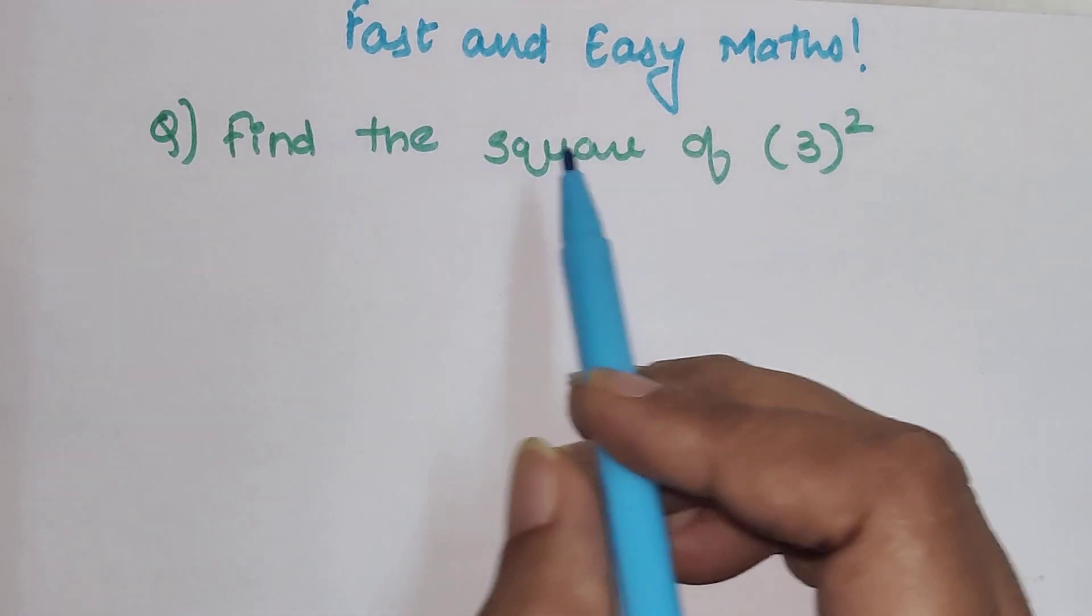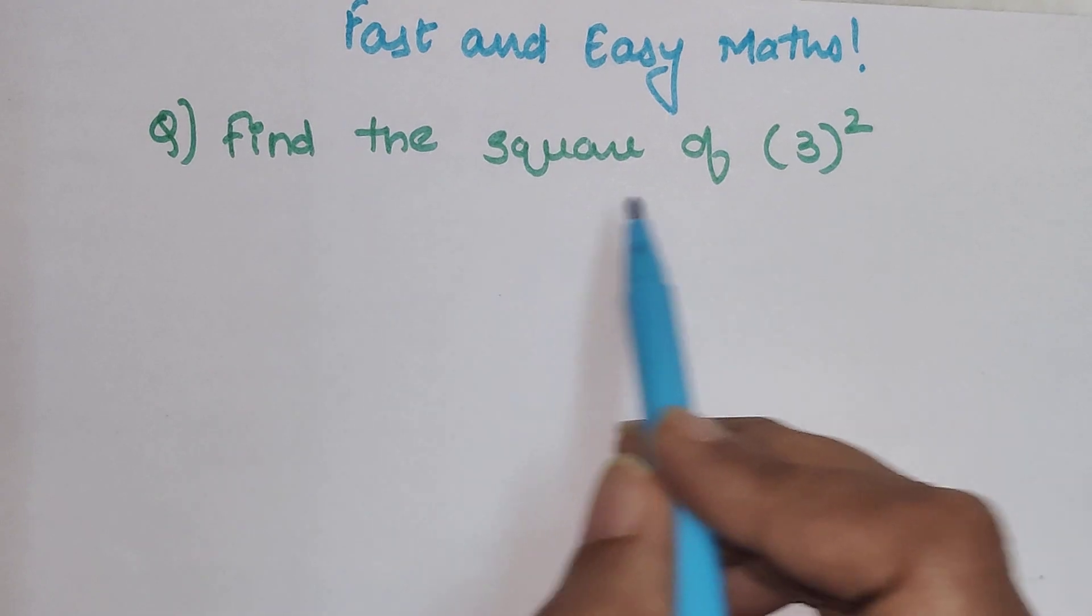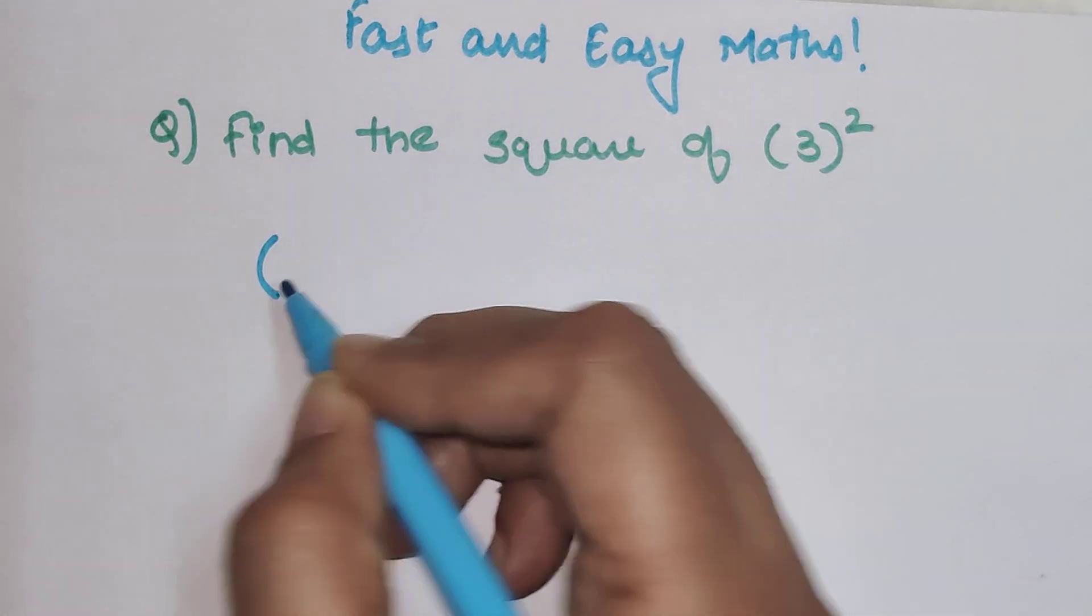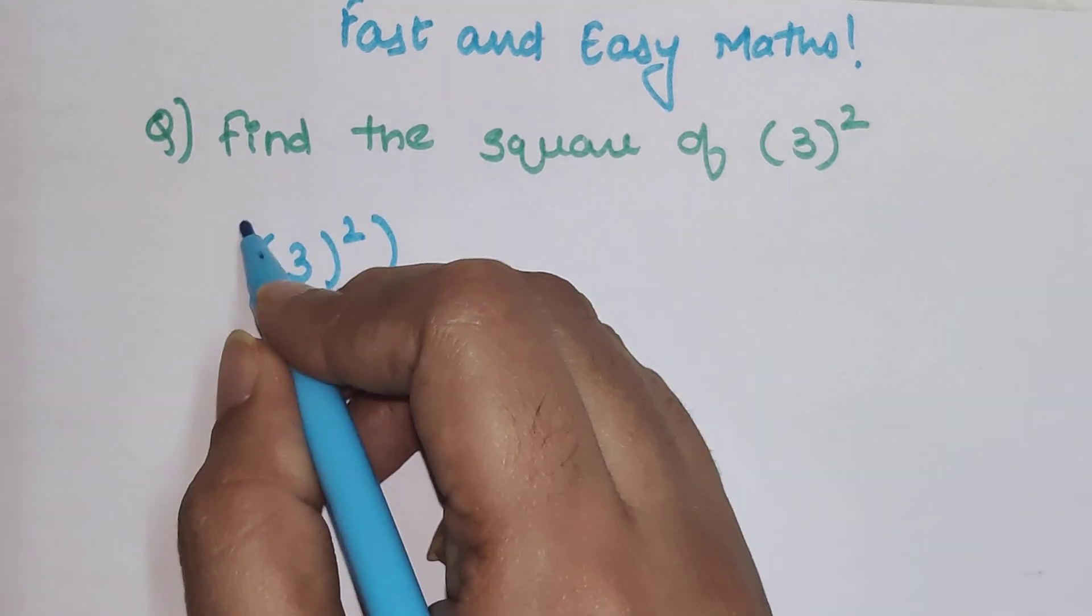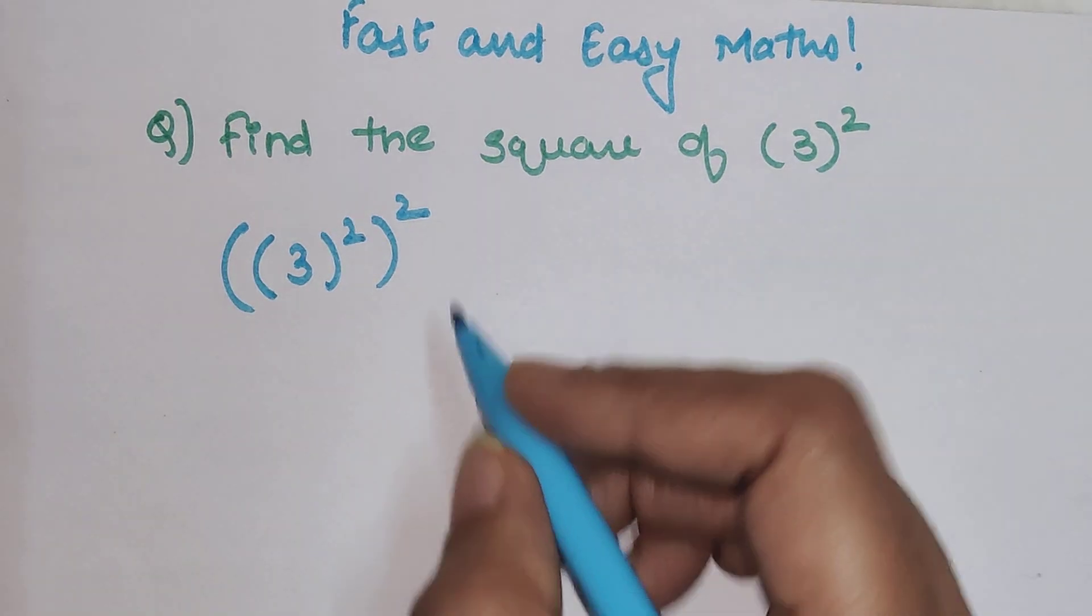The question is: find the square of 3 squared. So basically, your actual mathematical representation is (3)², and whatever answer you get, you have to find the square of that as well.